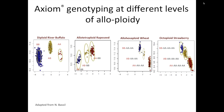You can see that as we increase in ploidy level, the clusters become closer together. But yet, for high-quality SNPs, we can cluster BB, AB, and AA—basically homozygous, heterozygous, and the other homozygous class of genotypes—pretty well using this approach.